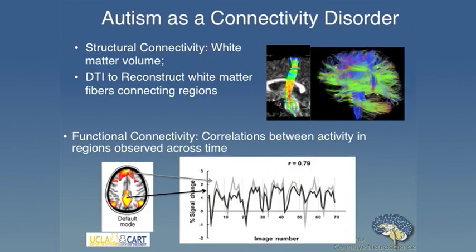If we think about this as connectivity — and that's the approach we and many other groups are taking — much has been said about autism as a connectivity disorder. I think almost every developmental disorder is a connectivity disorder, so we have to be more specific. There's a great deal of evidence for it in autism, including studies of structural connectivity and white matter volume from early infancy through late adulthood showing connecting fibers are different. I'll be focusing primarily on functional connectivity.